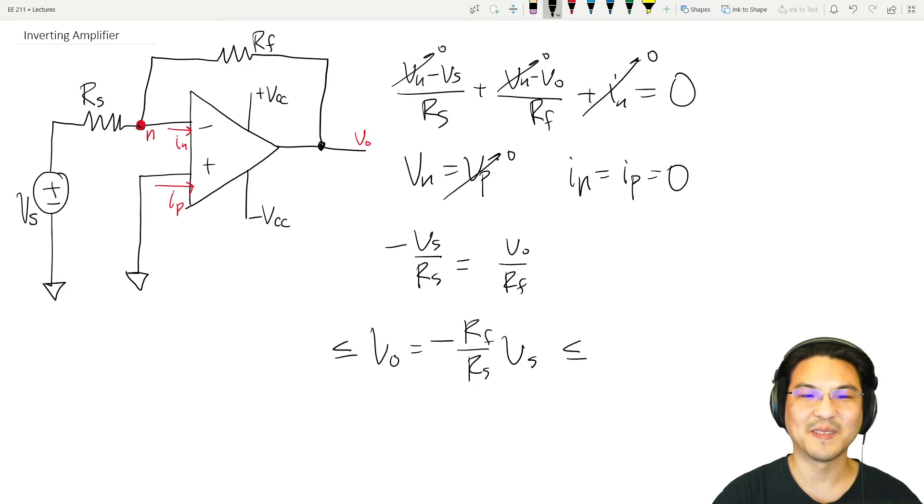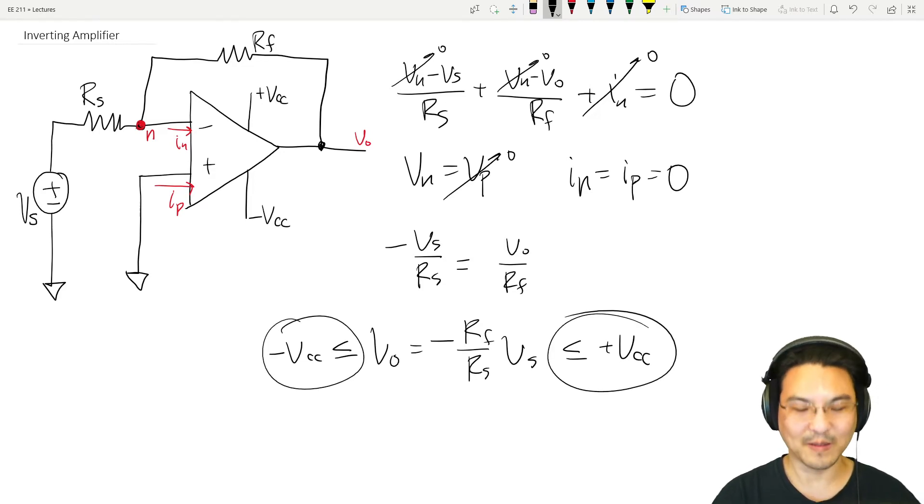So here is the output. We have to be careful—we have to make sure that we can't go more than this or less than this. Don't forget that the output can get saturated.